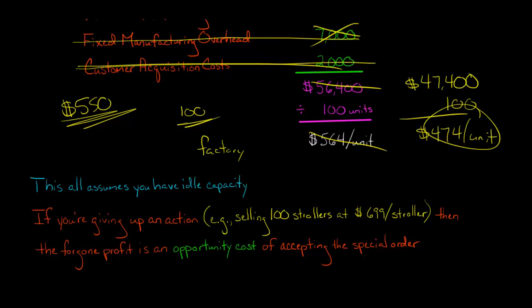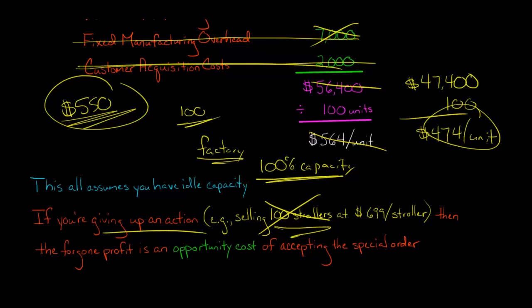But what if I told you that the factory was working at 100% capacity? It's like we can't make any more strollers. So if we accept this offer, if we say, yeah, we'll do this for the $550, then we are giving up some other action. Now, maybe there's strollers that we would make at the regular retail price of $699. And we are foregoing. We're saying, if we accept this offer to make the ones for $550, that means that we're not going to be able to make 100 of the ones that we're selling for a regular price because our factory is at 100% capacity. So it's basically like accepting this order would displace another activity.